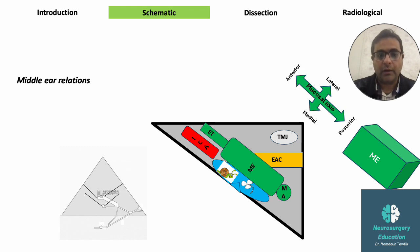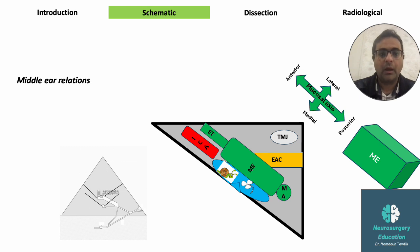The basal turn of the cochlea creates the promontory anteriorly. In the middle, the vestibule is connected to the middle ear by the oval and round windows. More posteriorly are the semicircular canals — specifically the lateral semicircular canal — which makes an imprint on the posterior part of the medial wall. There is also another segment of the facial nerve on this wall. Anteromedially to the middle ear is the internal carotid artery inside the petrous apex. The superior wall of the middle ear is the roof, or the tegmen tympani, and below it is the jugular bulb.